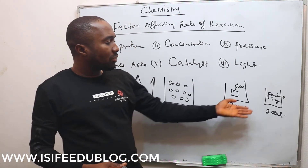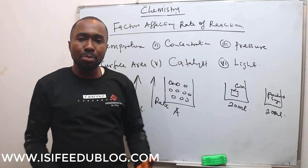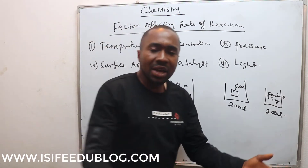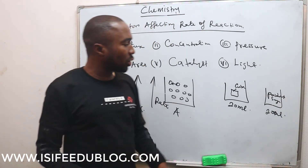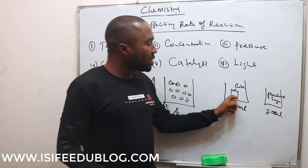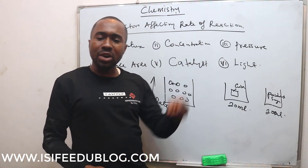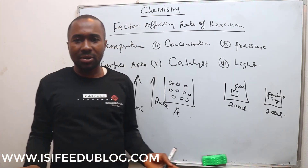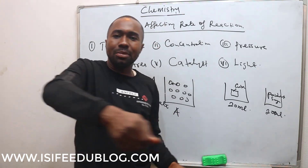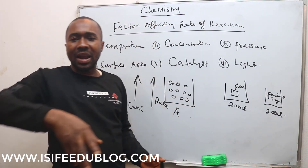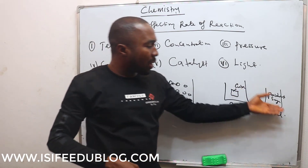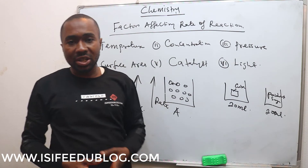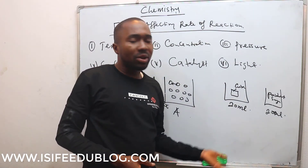Another effect of surface area is that when the surface area is increased, the bond between the reactants is already weak. And when the bond is weak, the reactants are free to collide with each other to form a product. For example, when you are cooking and you put a cube of Maggi inside the pot, it may not dissolve very well. But when you crush the Maggi so it is in crystalline or powdered form, it can easily dissolve because the surface area has been increased.